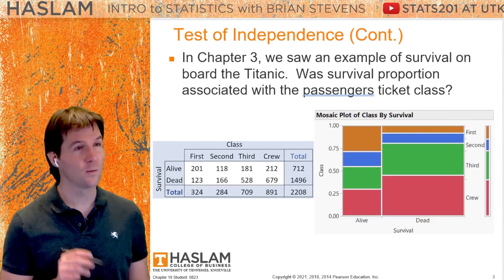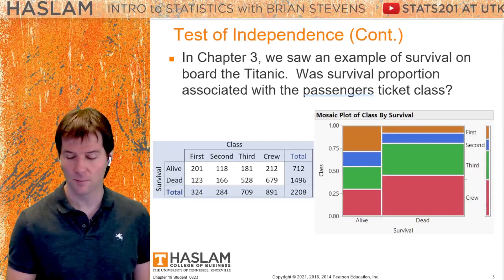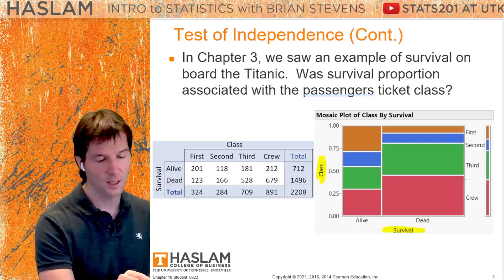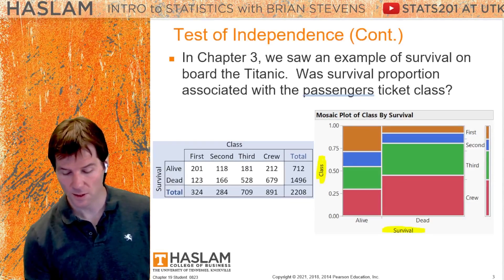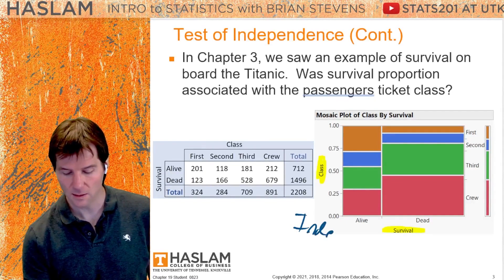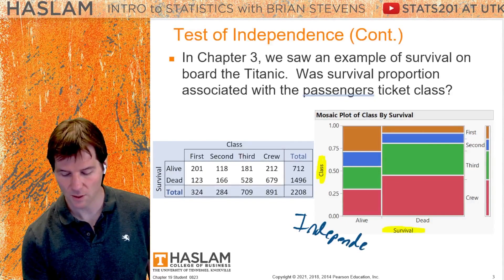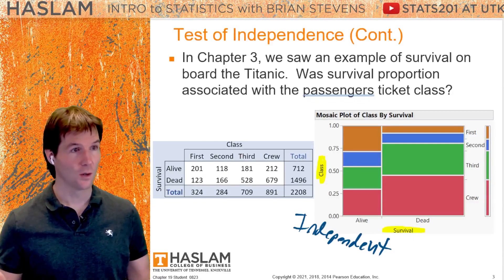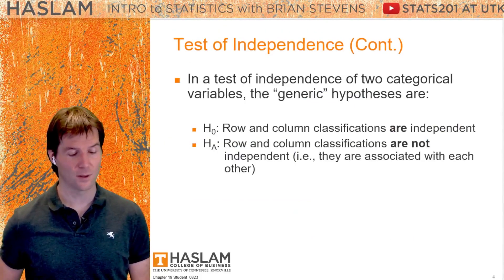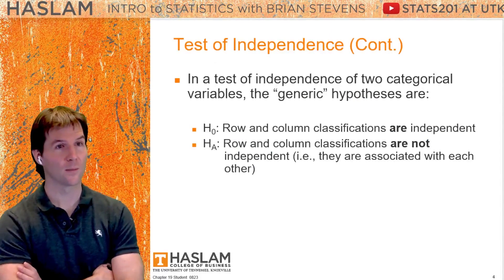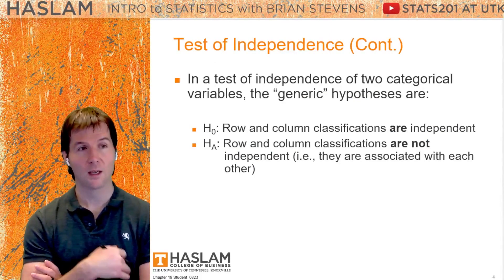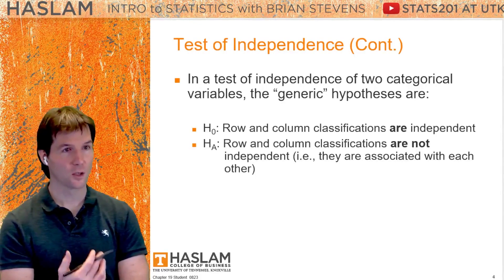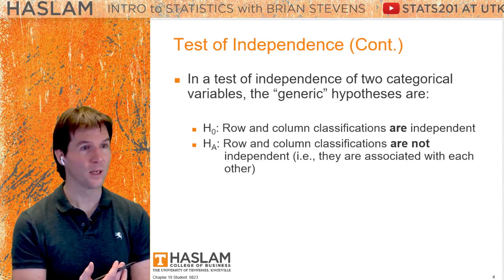To write the null and alternative, we will not use statistical notation. We will simply look at the x and the y variable and add the word 'independent.' Remember what test you're doing — you're doing the chi-squared test of independence. So the null hypothesis will be: class is independent of survival.